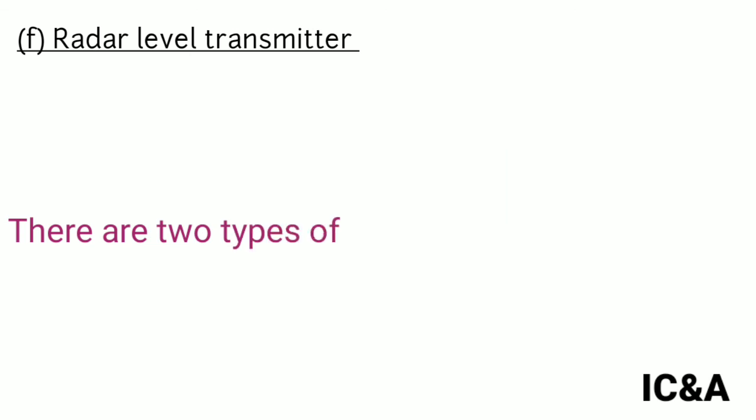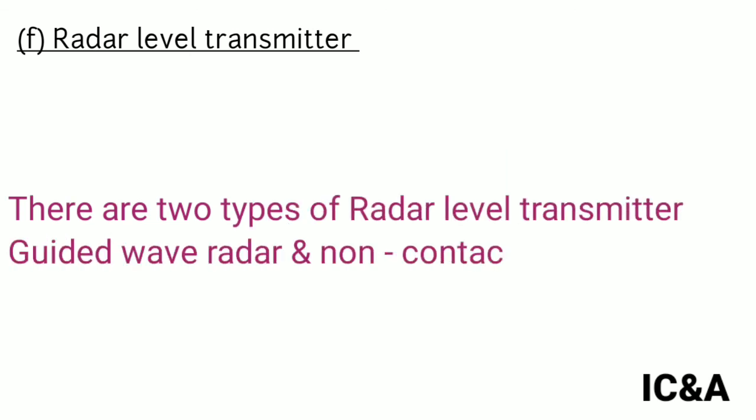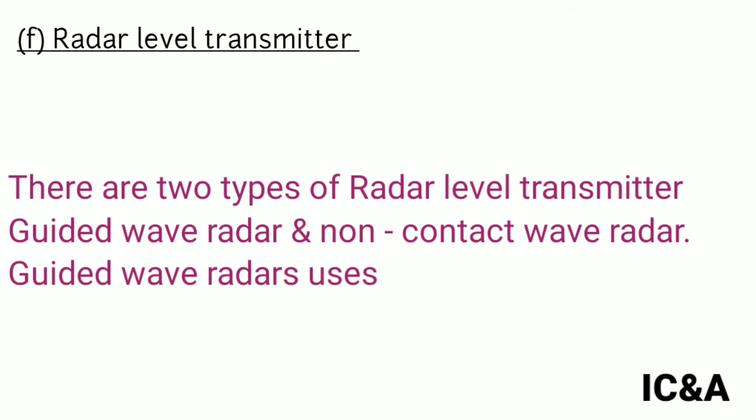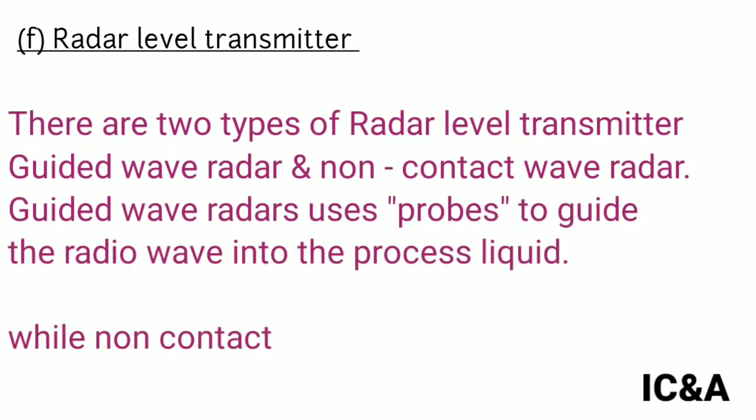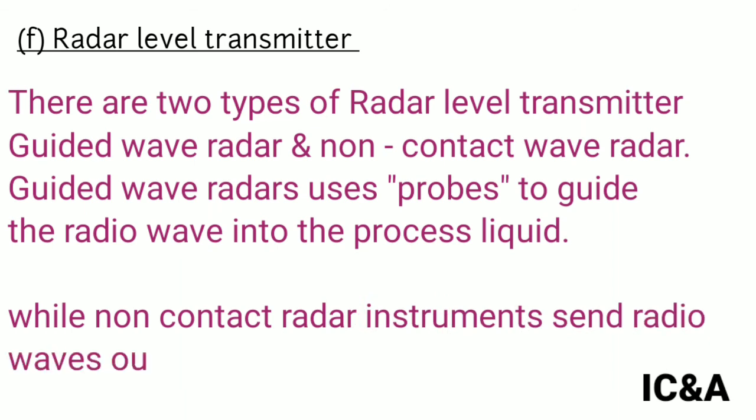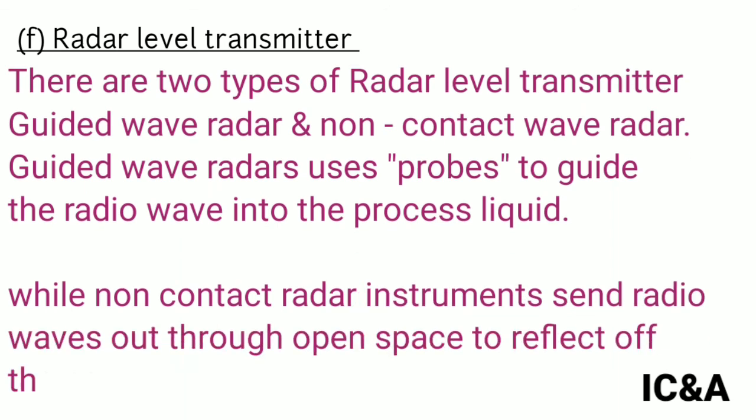Radar level transmitter. There are two types of radar level transmitter: guided wave radar and non-contact wave radar. Guided wave radar uses probes to guide the radio waves into process liquid, while non-contact radar instruments send the radio waves out through open space to reflect off the process material.